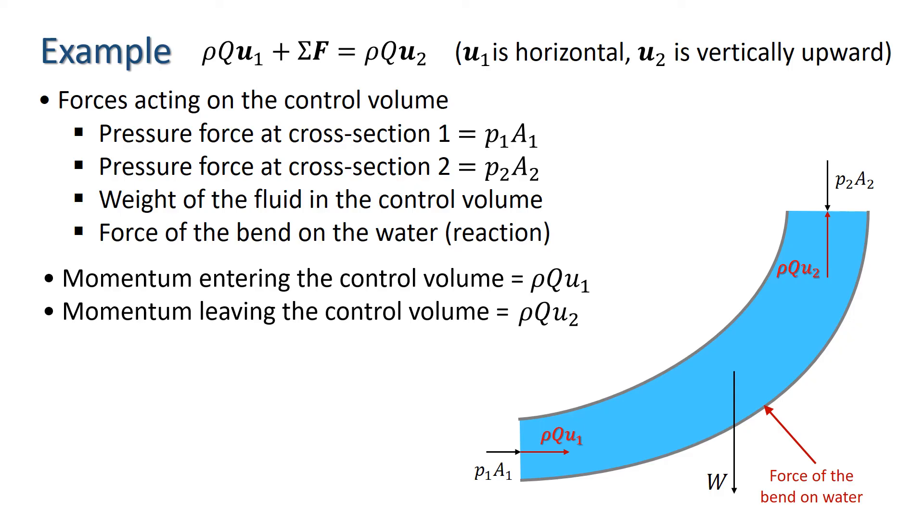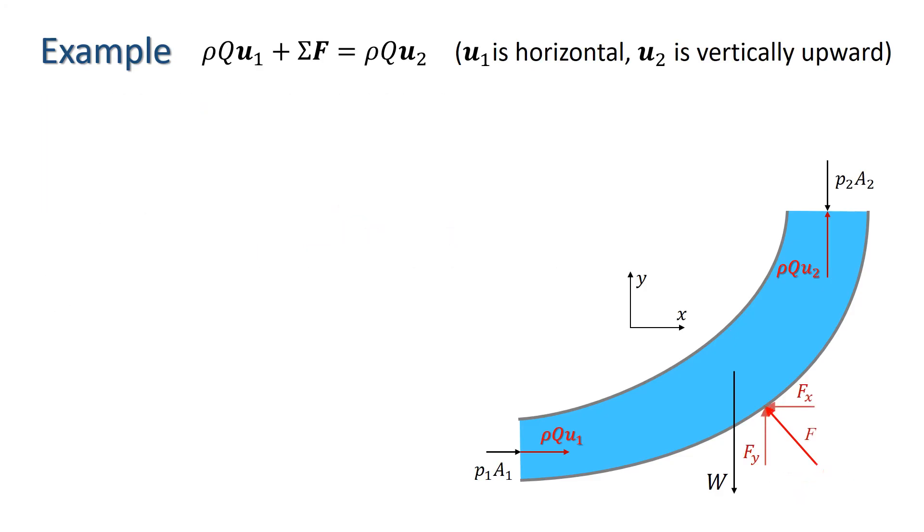Remember that the momentum equation is a vector equation so we need components of all forces and momenta in the directions of orthogonal axes. The choice here is obvious in that we take a horizontal axis and denote it x and a vertical axis which we denote y. So in each direction we have the momentum entering the control volume plus the sum of the forces acting on the control volume equals the momentum leaving the control volume.